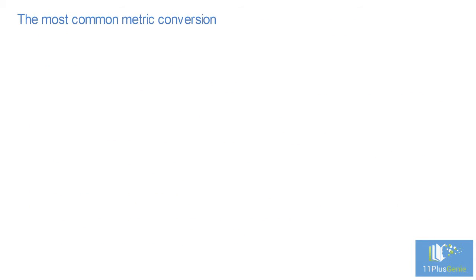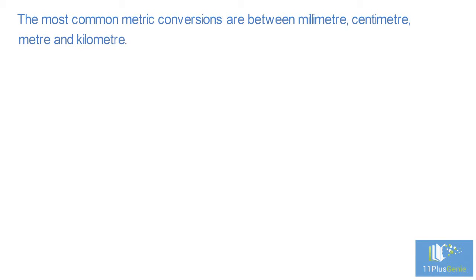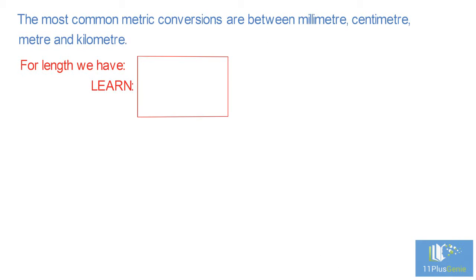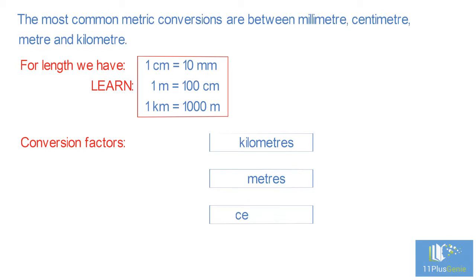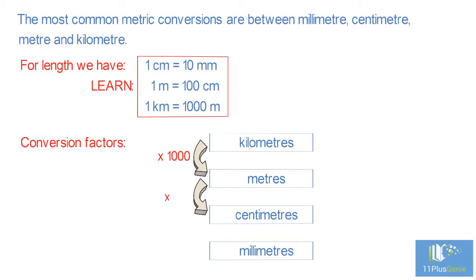The most common metric conversions are between millimeter, centimeter, meter, and kilometer. You need to know the following conversion factors for length: one centimeter equals 10 millimeters, one meter equals 100 centimeters, one kilometer equals 1000 meters. To convert between the different units of length, you can use the following diagram. To convert kilometers to meters, we times by 1000. To convert meters to centimeters, we times by 100. To convert centimeters to millimeters, we times by 10.